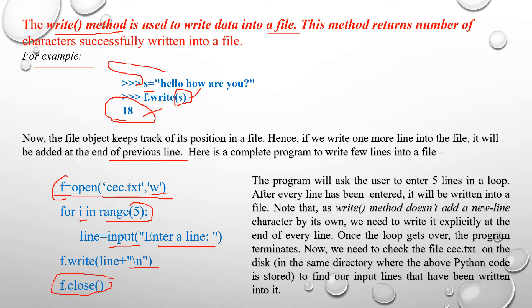After that, I am going to close the file. This program will ask the user to enter 5 lines in a loop, passing 5 as the range, so the program asks for 5 entries. After every line has been entered, it will be written into the file. Note that the write method does not add a new line character on its own — we need to write it explicitly at the end of every line.